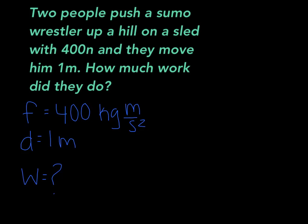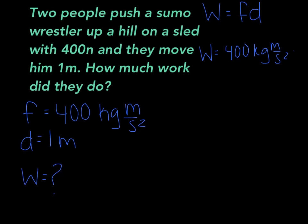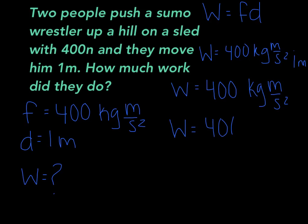You're going to write work equals force times distance. So your next step is to write work equals 400 kg times meters over seconds squared, times one meter. Then work equals 400 times one meter, so your answer would be 400. You write 400 kg meters over seconds squared, and you have to change it into joules, so your answer is 400 joules. That is your answer for that problem.